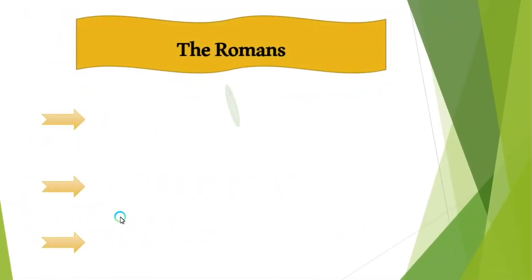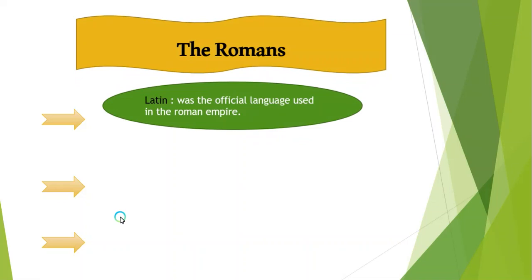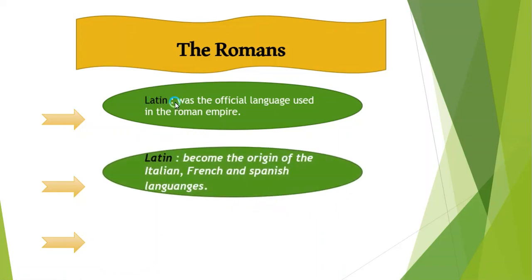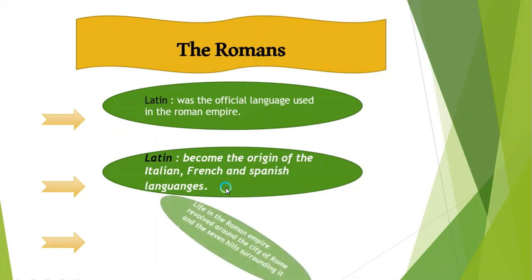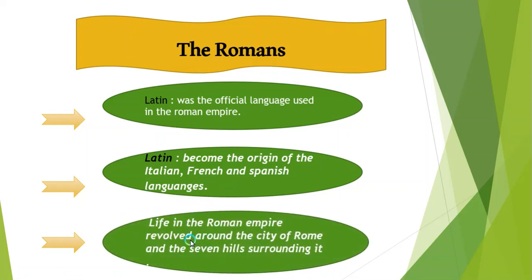Now let's look at different characteristics of the Romans. The official language used in the Roman Empire was called Latin. Latin then became the origin of the Italian, French, and Spanish languages. The life in the Roman Empire revolved around the city of Rome and the events held surrounding it.